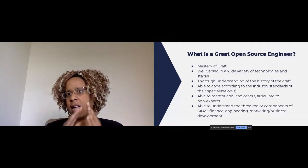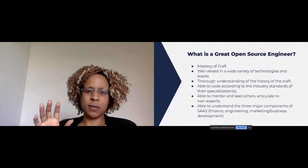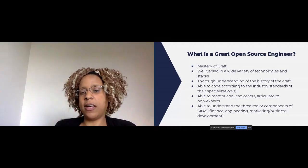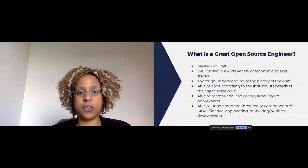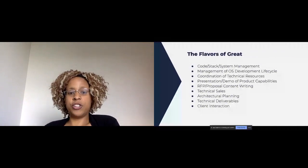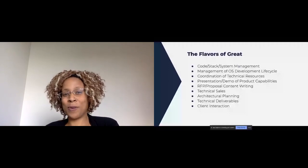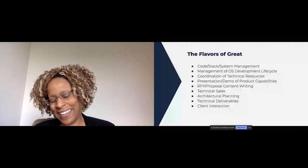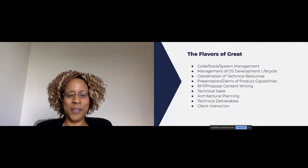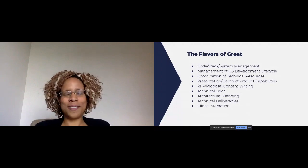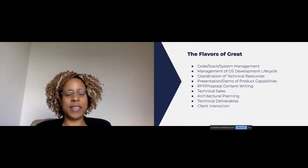Flavors of great — you don't have to master all of those elements to be a great engineer. It is code stack management, OS development lifecycle management, coordination of technical resources. Somebody has to make a blueprint for the house and dole that out to other engineers in a succinct way. It also involves coordination of proposals, technical content writing, and technical sales. Your sales guide probably needs your help — making good friends with your sales and business development team is one of the best things you can do.